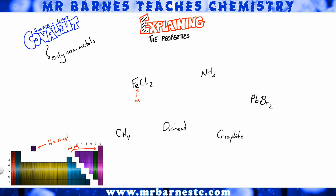Fe — that's iron, that's a metal, so straight away I can rule that out; it is not covalent. NH3 — nitrogen is a non-metal, hydrogen is a non-metal, so NH3 is covalent. PBBr2 — Pb is a metal, so it's not covalent. CH4 — carbon is a non-metal, hydrogen is a non-metal, so I've got a covalent compound.